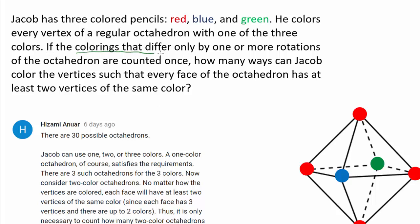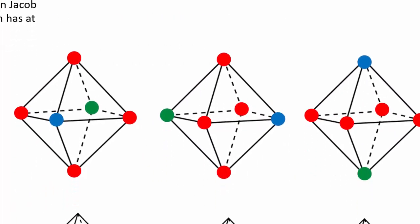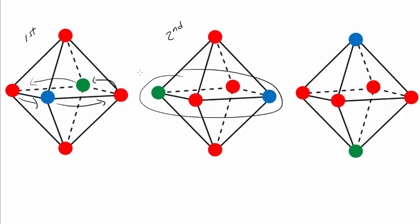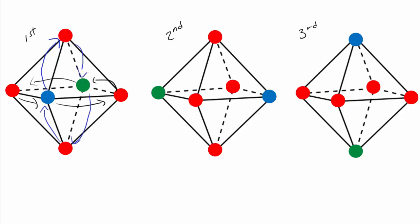It's crucial that colorings that differ only by rotations are counted once. For example, these 3 octahedrons look different, but they are all the same octahedron if rotations don't change its identity. To go from the first to the second, we simply rotate everything this way, getting the arrangement shown. To go from the first to the third, we rotate the other way, so the blue pops back up while the green submerges down below. All of these octahedrons are the same thing.